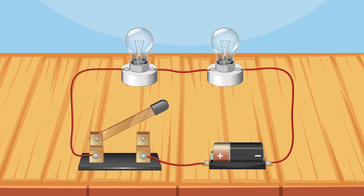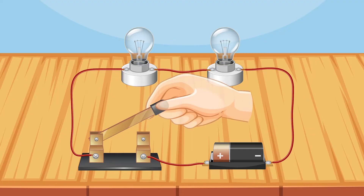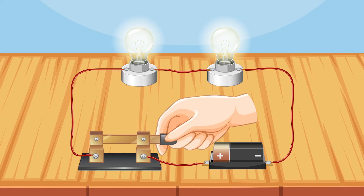The bulbs are arranged in series, which means they are connected one after another, forming a single pathway for the electric current to flow through. As we turn on the switch, observe closely.